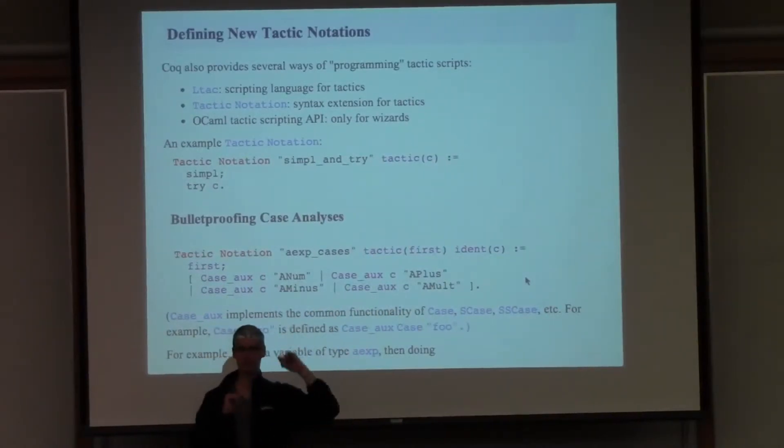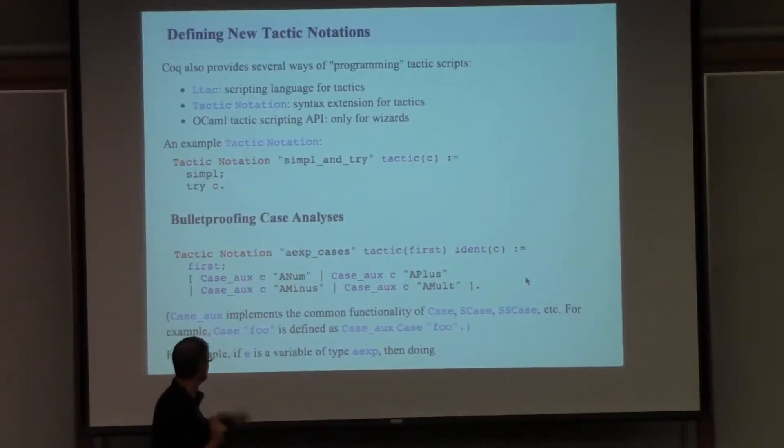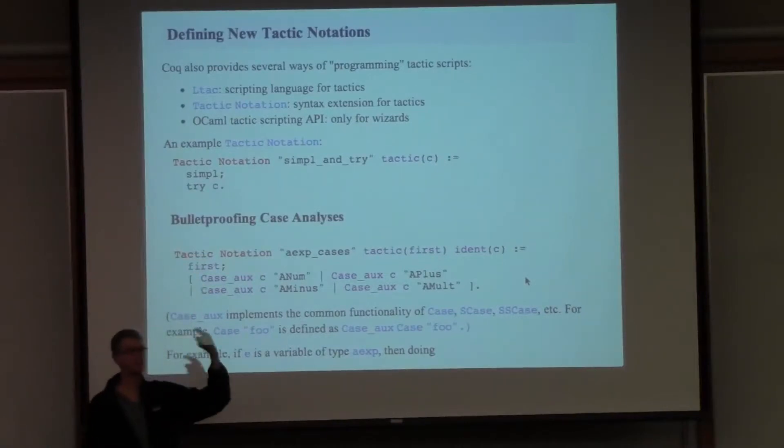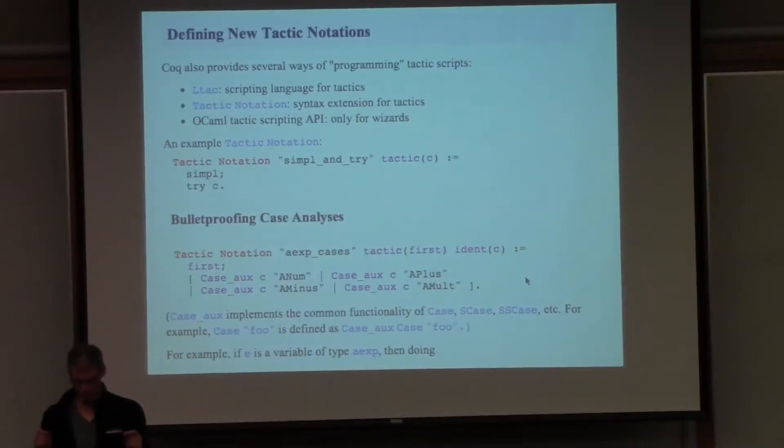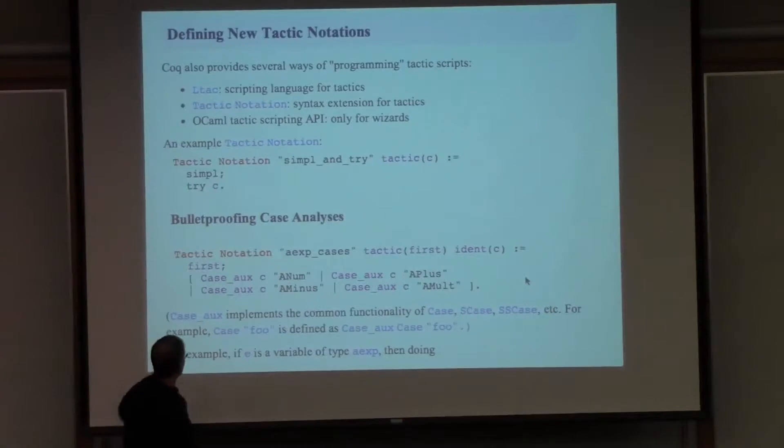to do case ox C with a different string in each of the cases generated by the first. So typically, first will be induction on some piece of data of type AXP and there will be four clauses in the inductive proof.